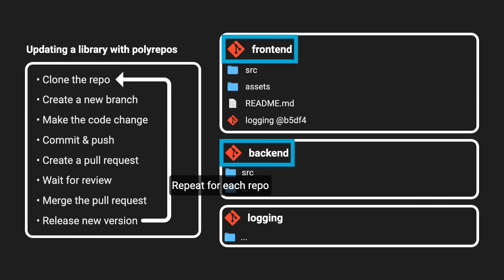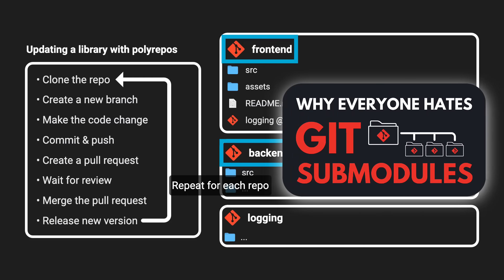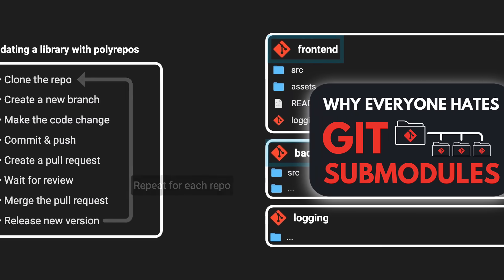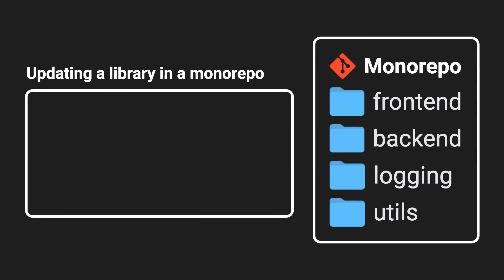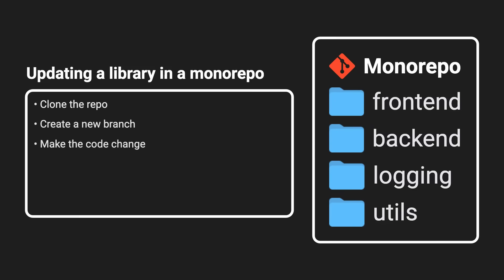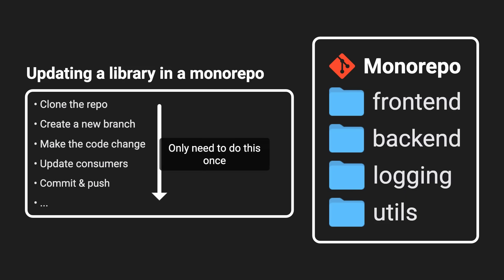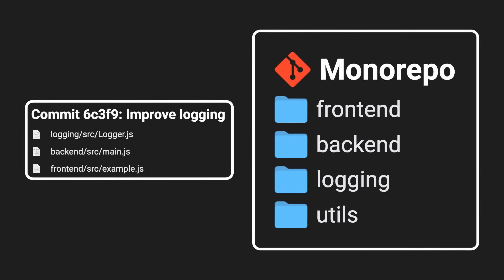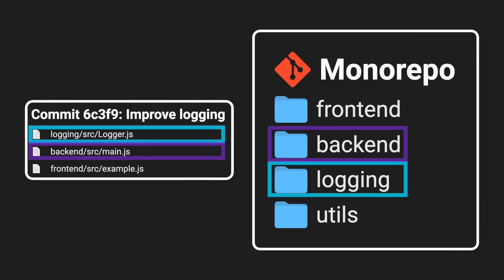Alternatively, if you use git submodules, you have to deal with all the complexity that they bring along. Contrast this to the monorepo approach, where all you need to do is clone the monorepo — which you usually only do once — make the code change on a new branch, and you can already update all consumers before you even commit. You only have to go through this process once, and you don't have to wait for reviews in between. The entire feature is then contained in a single atomic commit, even if it spans across multiple modules.